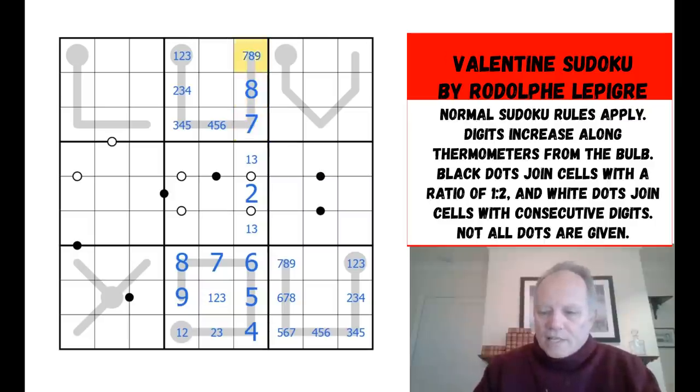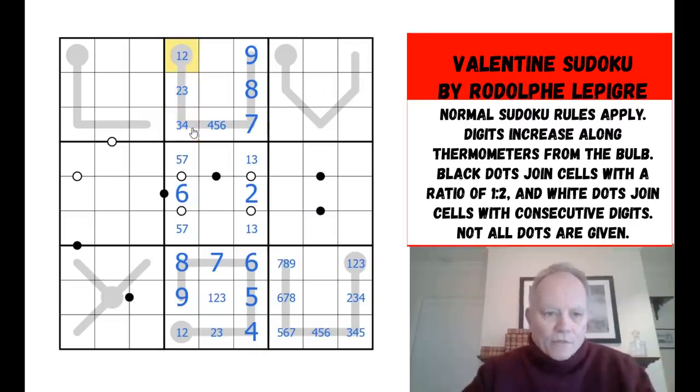That is actually going to sort out the end of this thermo all the way to the end, because once three is gone there, this has become a four and we can fill it in all the way to the end, which is a nine. So then we end up with a one, two, three triple there. Now we know these ones are seven, eight and nine. That doesn't resolve much else. The sevens tell us that seven is on this group of cells. And therefore, since they're all consecutive and they don't include eight, they must be seven, six, five in some order.